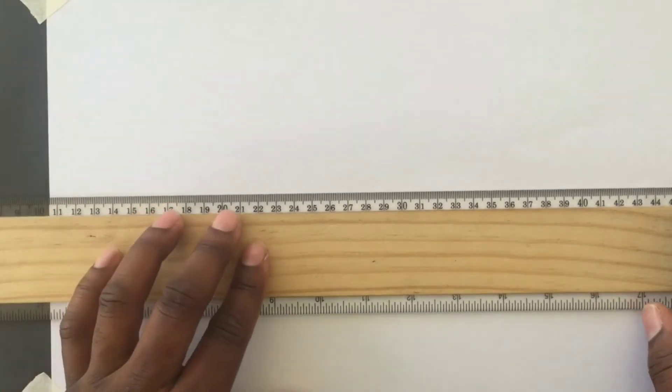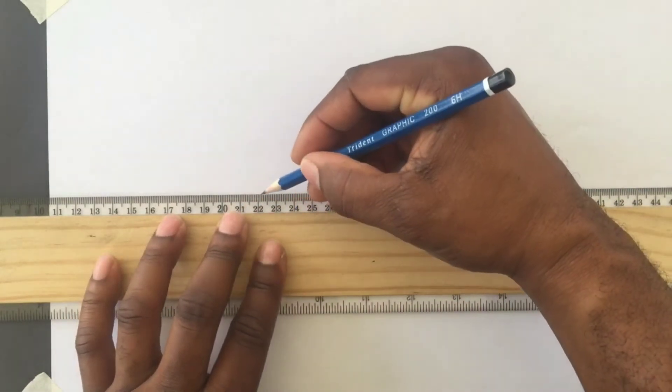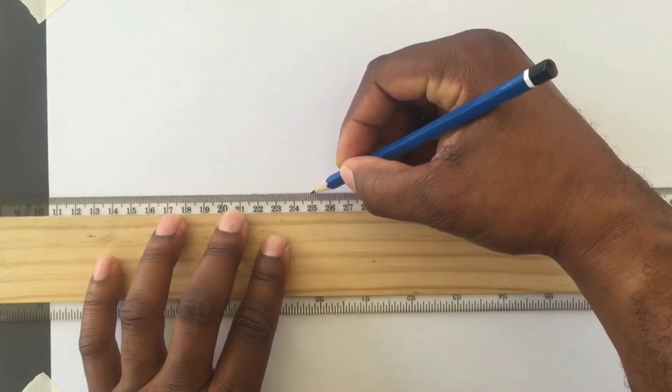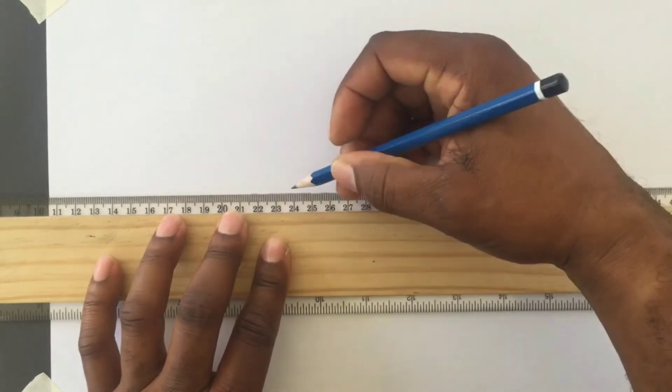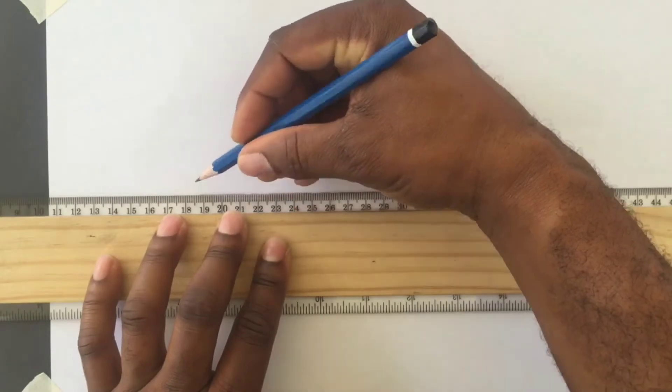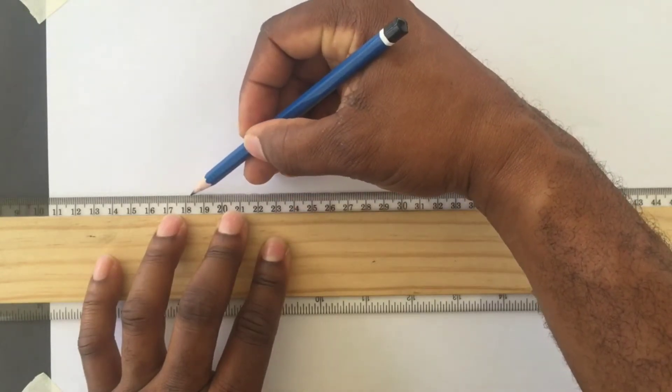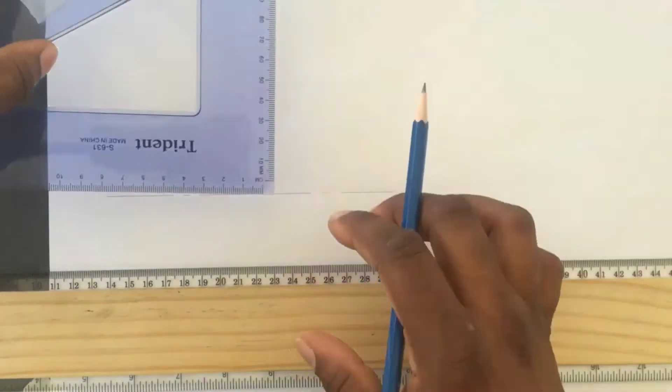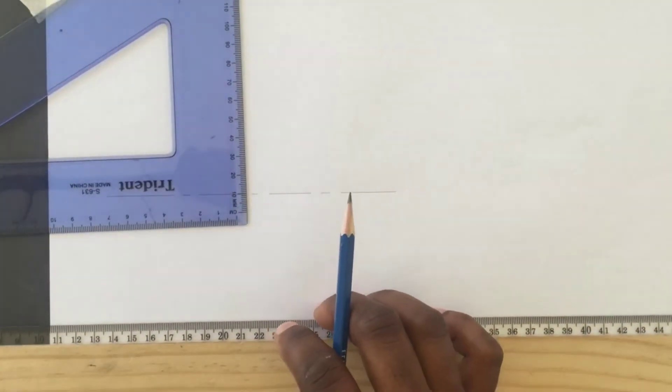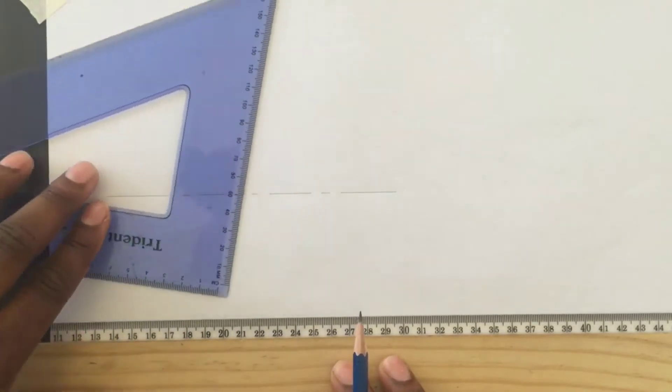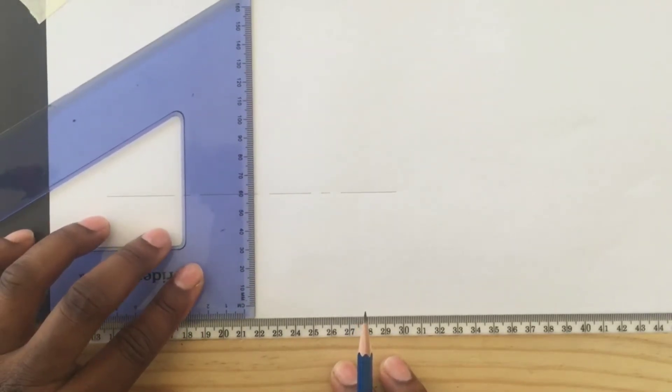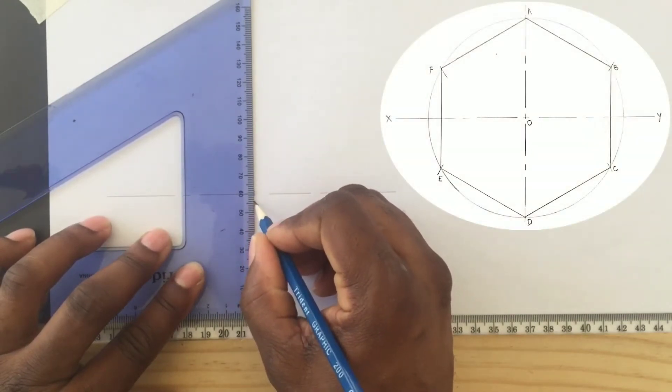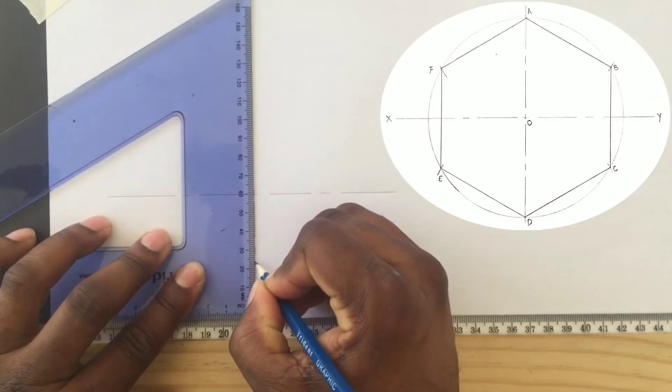First we will draw a horizontal center line using our t-square. A center line consists of long and short dashes. Next we will use our set square along with our t-square and we will draw another center line to be perpendicular to the first one we drew.